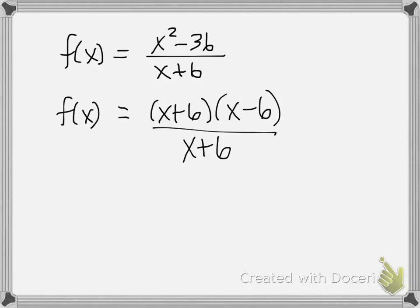Notice here that the factor x plus 6 cancels, and so we are left if we simplify this as f(x) equals x minus 6. So I have simplified my function f.